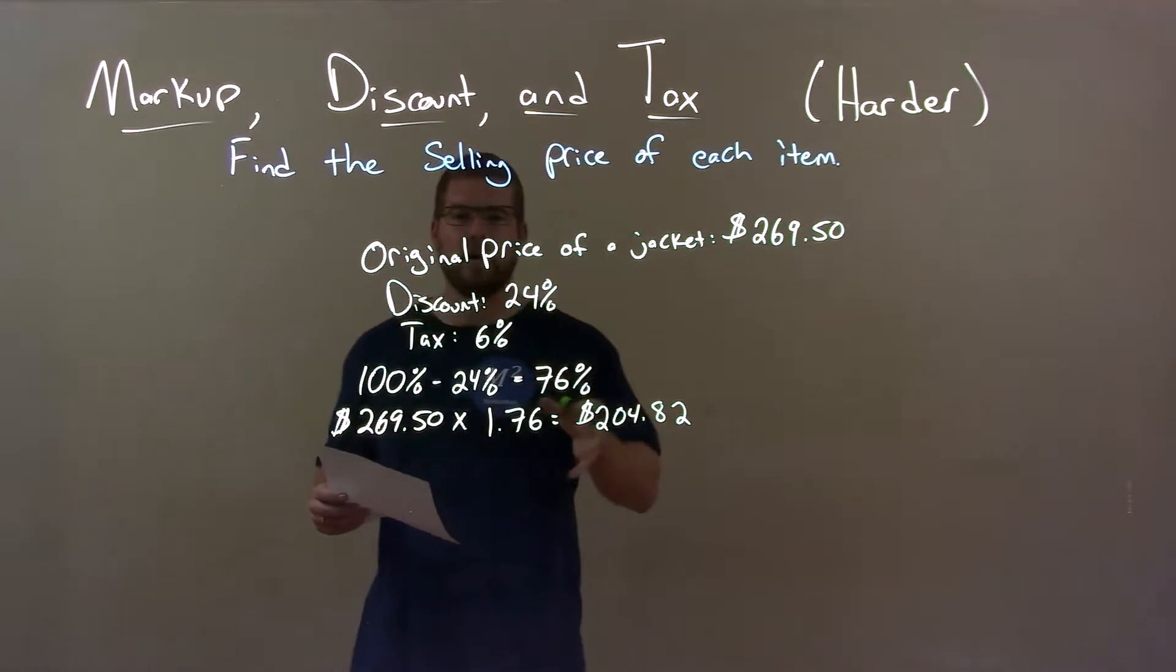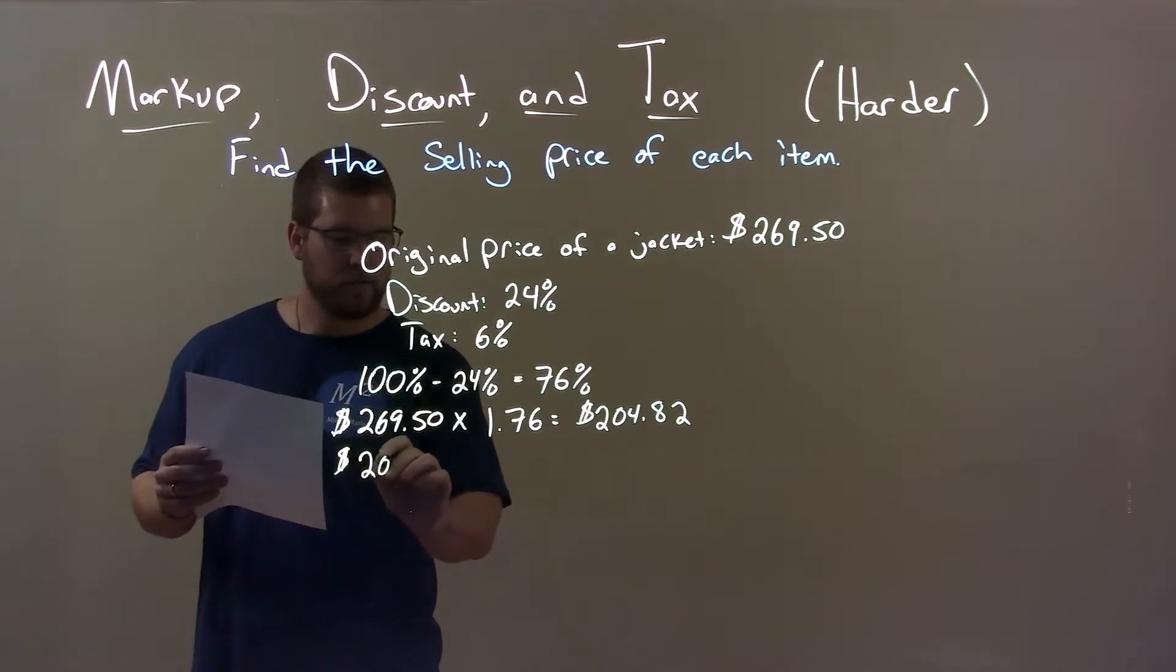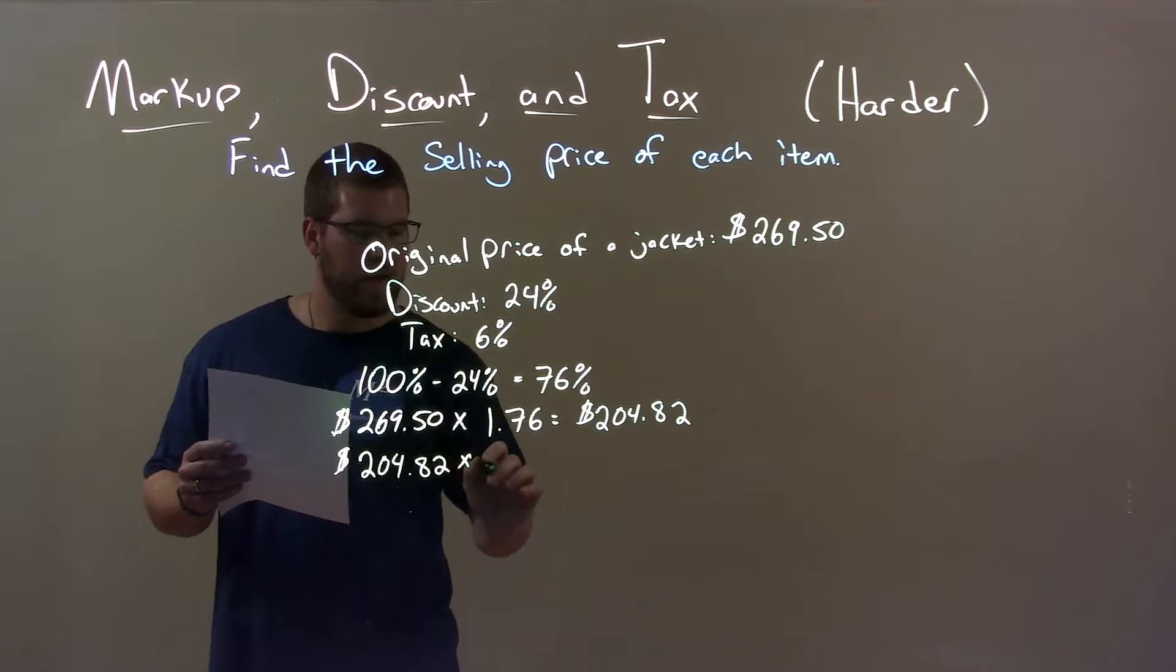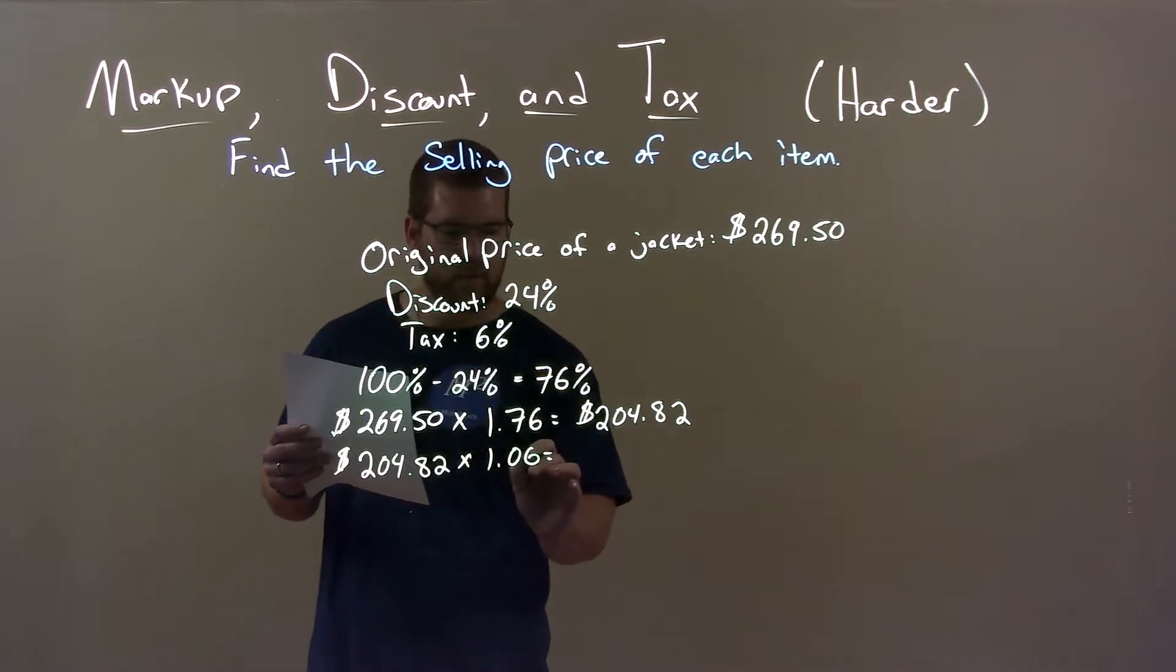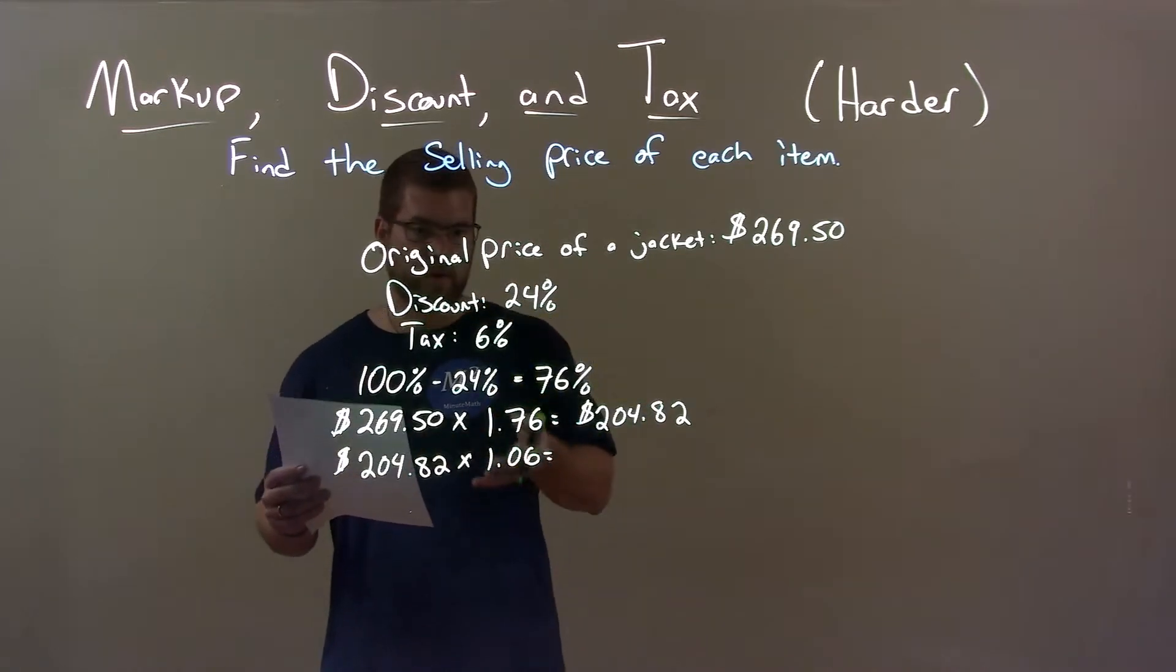Now we can calculate our tax on that. We take $204.82 and multiply that by 1.06. That represents a 6% tax and includes the price.